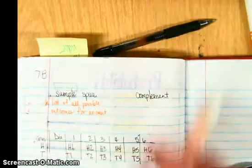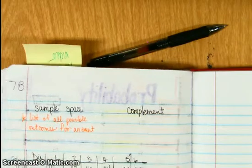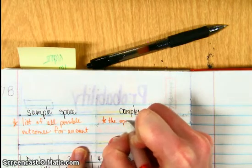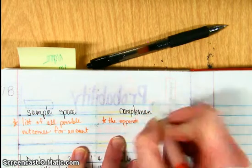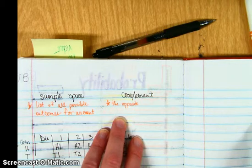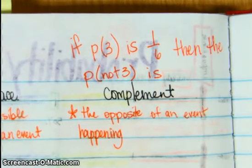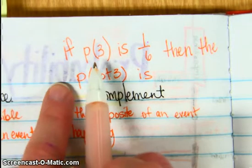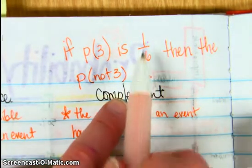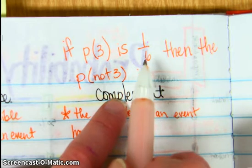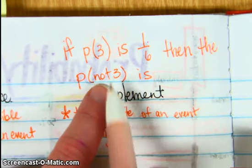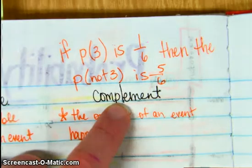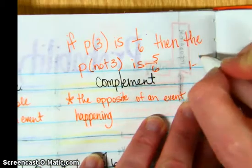Then we've got the complement, and that might be new for you. So it's the opposite of an event happening. So if we had the probability of rolling a three on a dice is one out of six, one number out of six is the number three, then the probability of not a three, that's the complement, is five over six. You get that by subtracting one minus one-sixth.